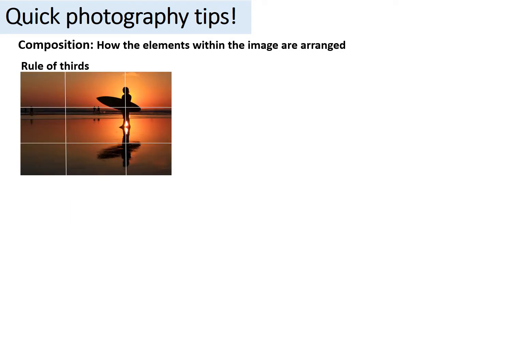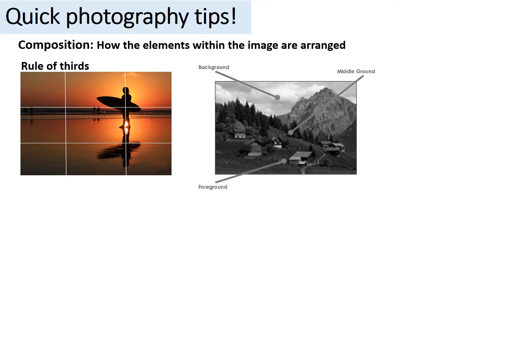One way of achieving balance is to use the rule of thirds, where you use the grid on top of your screen. The idea is that you line up the key parts of your image along the lines where they cross — for example, you can see here the surfer and then the horizon line. You might also think about having a foreground, middle ground, and background if you're taking a landscape shot, which creates a balanced image with lots of interest.